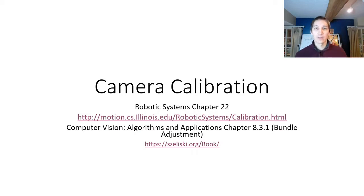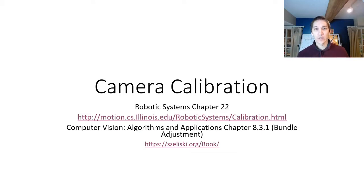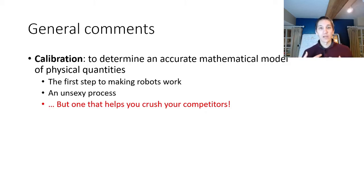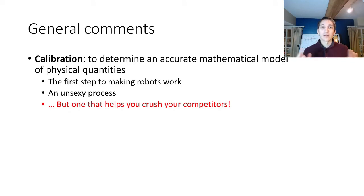Hello folks, today we're going to be talking about camera calibration, and this will be the subject of Robotic Systems chapter 22 as well as CVAA chapter 8.3.1. The general topic of calibration is trying to determine some sort of accurate mathematical model of certain physical quantities so that we can map from sensor observations into some sort of understanding of the actual physical world. This is essentially the first step to making robots work at all.